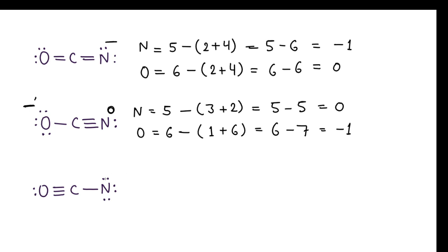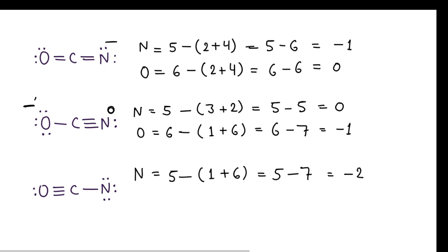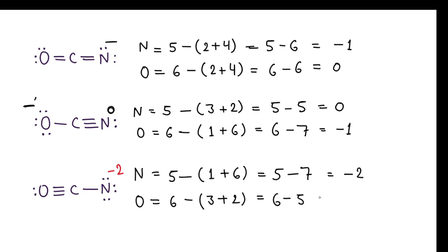Now calculate formal charge for the third resonance structure. For nitrogen: 5 valence electrons minus (number of bonds: 1) plus (non-bonded electrons: 6) equals 5 minus 7 equals minus 2. So the charge here is minus 2. For oxygen: 6 minus (number of bonds: 3) plus (non-bonded electrons: 2) equals 6 minus 7 equals minus 1. So minus 1 charge on this oxygen atom.